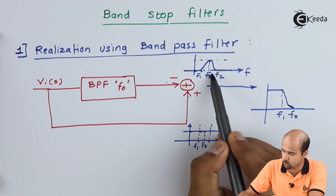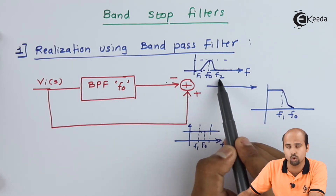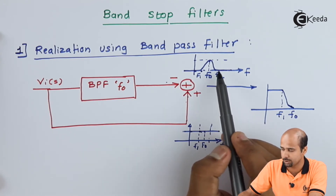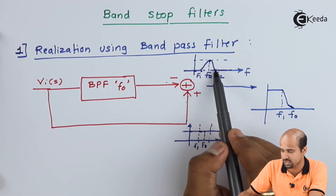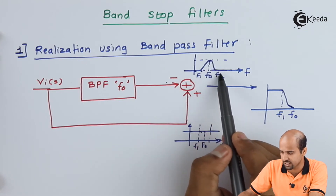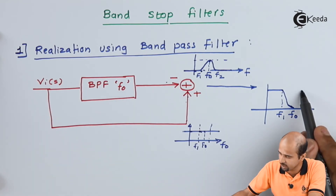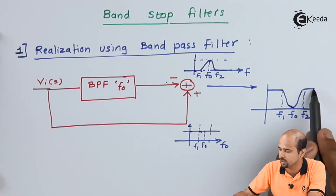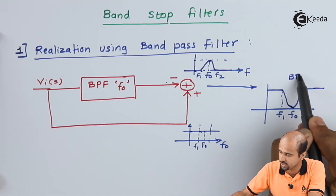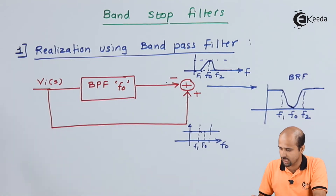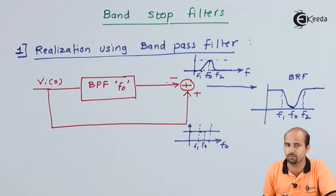From f0 to f2, as frequency increases further, the band pass filter output becomes attenuated again, so the difference between the input signal and band pass output increases and attains the maximum value at f2. This is how we get the band reject filter waveform — with a notch at f0. This is how we realize the band stop filter using a band pass filter.